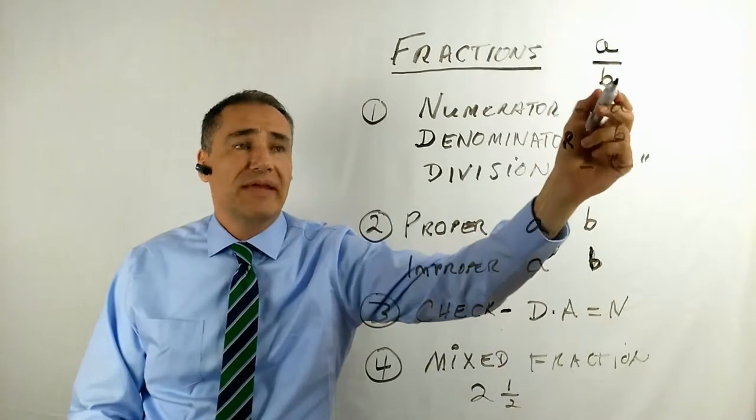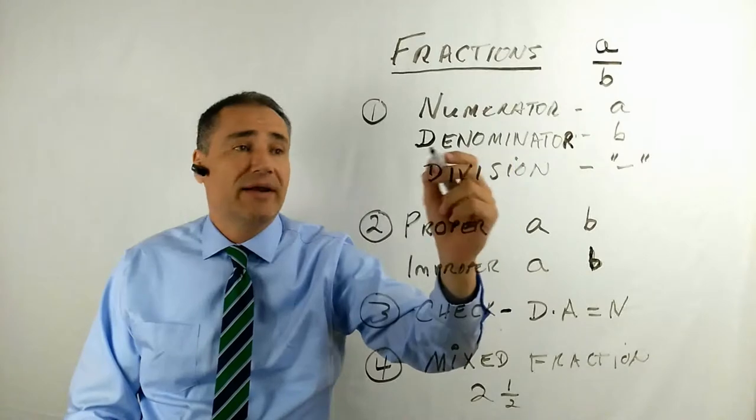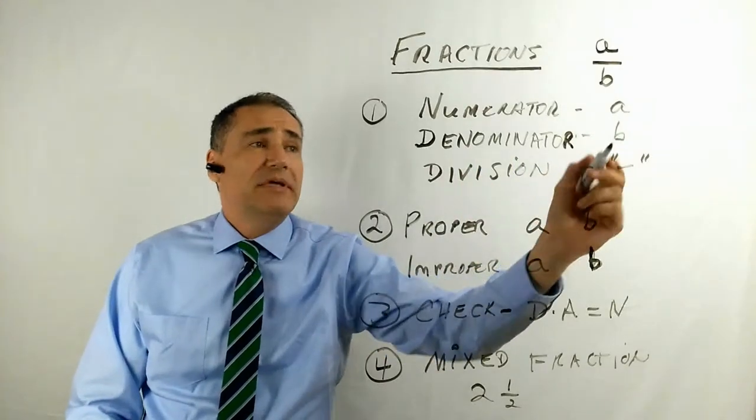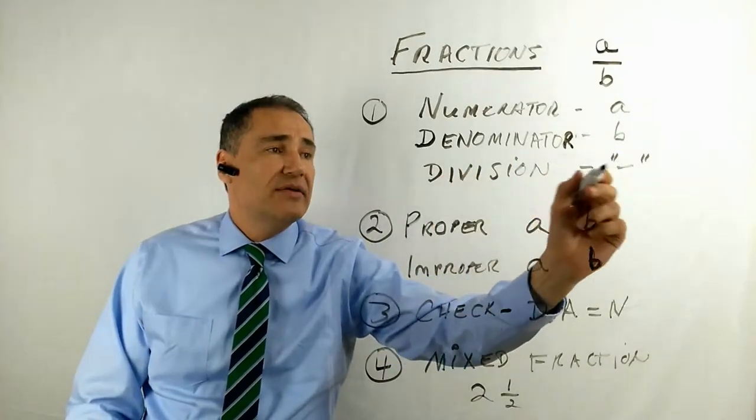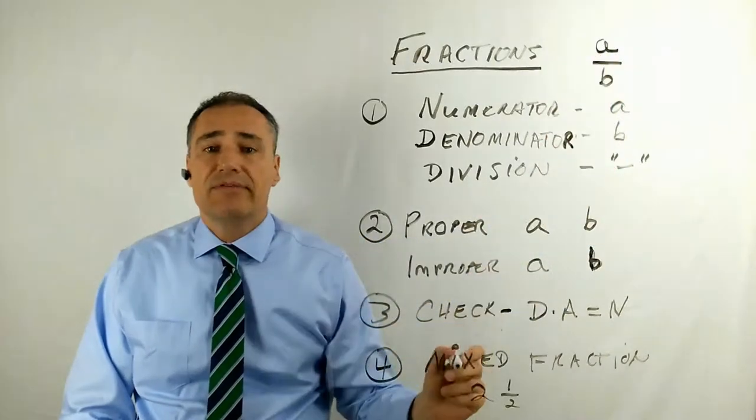So the numerator is just what you would call the A part. These are just letters that could represent any number between one and nine. Denominator, there's a B. The division sign, this little horizontal line, that just means B is dividing into A.